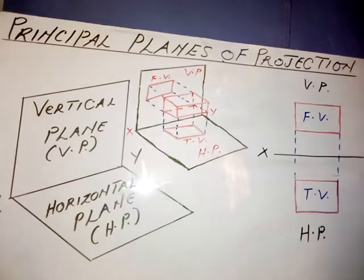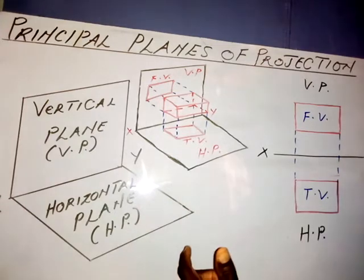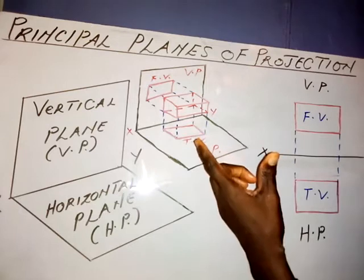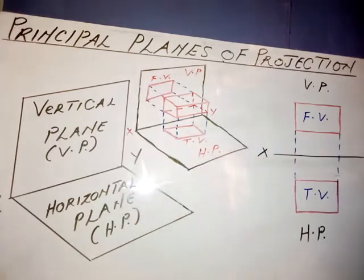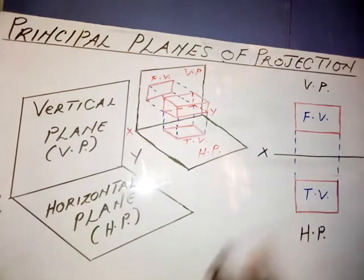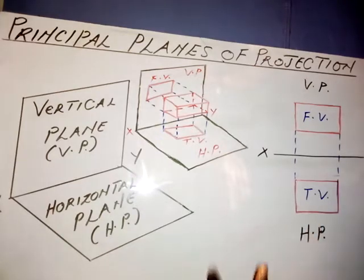We have other planes that we make use of but they are not often used. The other planes we have are the auxiliary vertical plane and the auxiliary inclined plane. We make use of those two planes depending on the condition or on the features of the object that we want to produce its views.